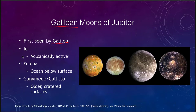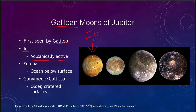There are four of them. Io, the closest one, is volcanically active — we're actually seeing volcanoes on its surface. We do not see any impact craters on it because it is constantly being resurfaced. It is actually the most volcanically active object in the solar system. Europa has an ocean below its surface — we see a surface of water ice, but down below there is a liquid water ocean.